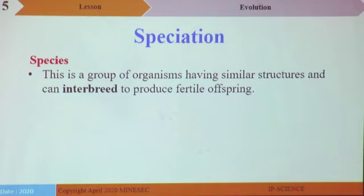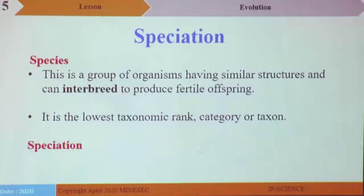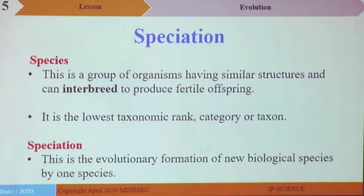Speciation. The word speciation is formed from species. Species is a group of living organisms that look alike and can interbreed to produce a fertile offspring. If you look at the human race, an African can interbreed with a European to produce an offspring capable of producing another. Species is the lowest taxonomic rank. Speciation, therefore, is the evolutionary formation of new biological species by one species.